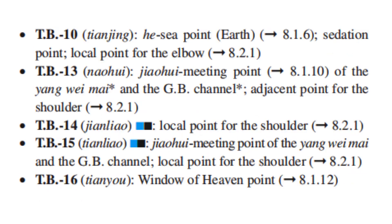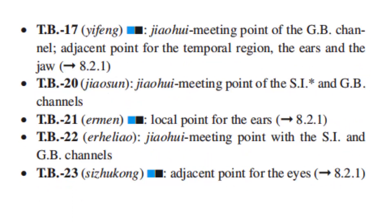TB13 is the Jiao Hui meeting point of the Yang Wei Mai and GB channel, and adjacent point for the shoulder. TB14 is the local point for the shoulder. TB15 is the Jiao Hui meeting point of the Yang Wei Mai and GB channel, and also a local point for the shoulder. TB16 is the Window of Heaven Point. TB17 is the Jiao Hui meeting point of the GB channel, and adjacent point for the temporal region, ears, and jaw. TB20 is the Jiao Hui meeting point of the SI and GB channels. TB21 is the local point for the ears. TB22 is the Jiao Hui meeting point with the SI and GB channels. TB23 is the adjacent point for the eyes.